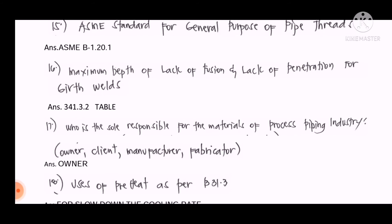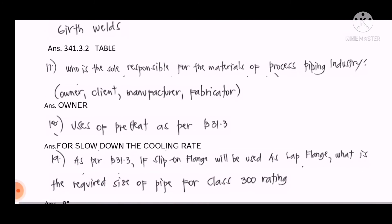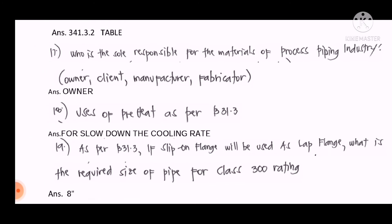Question number seventeen: Who is solely responsible for the material of process industries? The options include the owner, client, manufacturer, and fabricator. The answer is the owner.